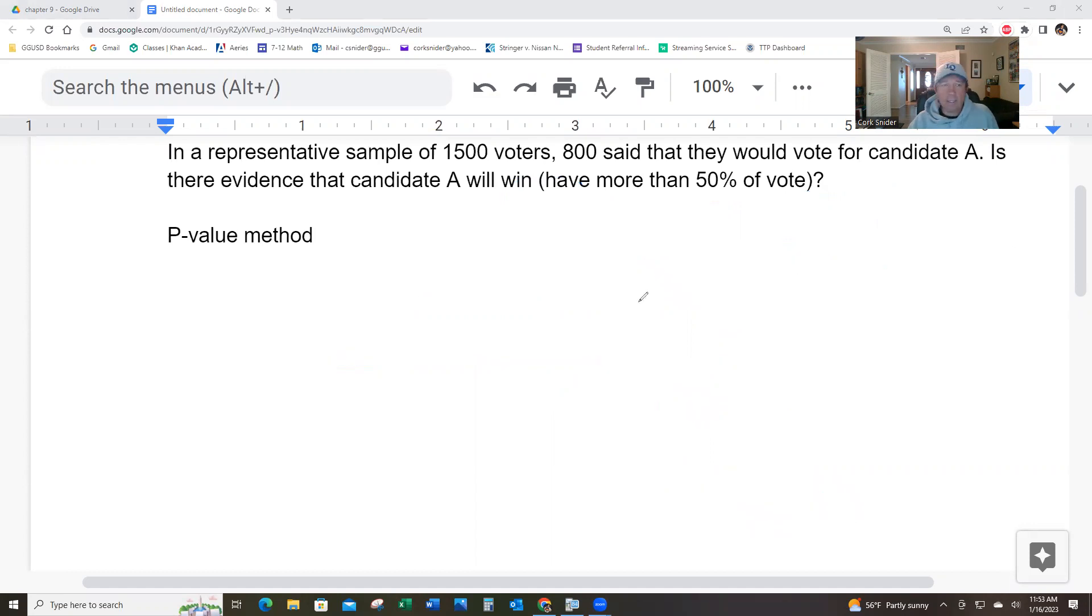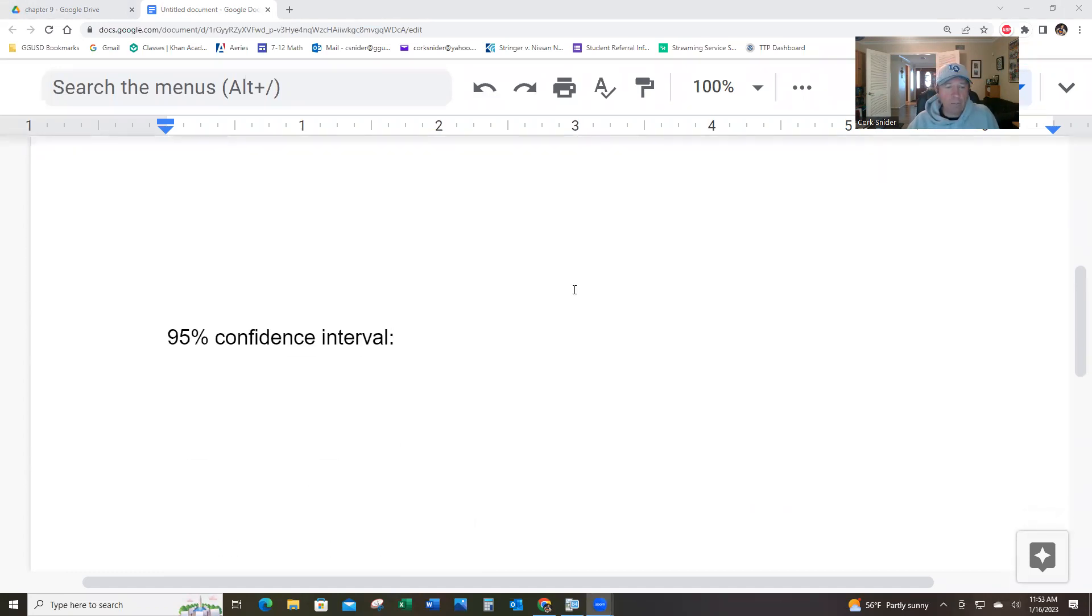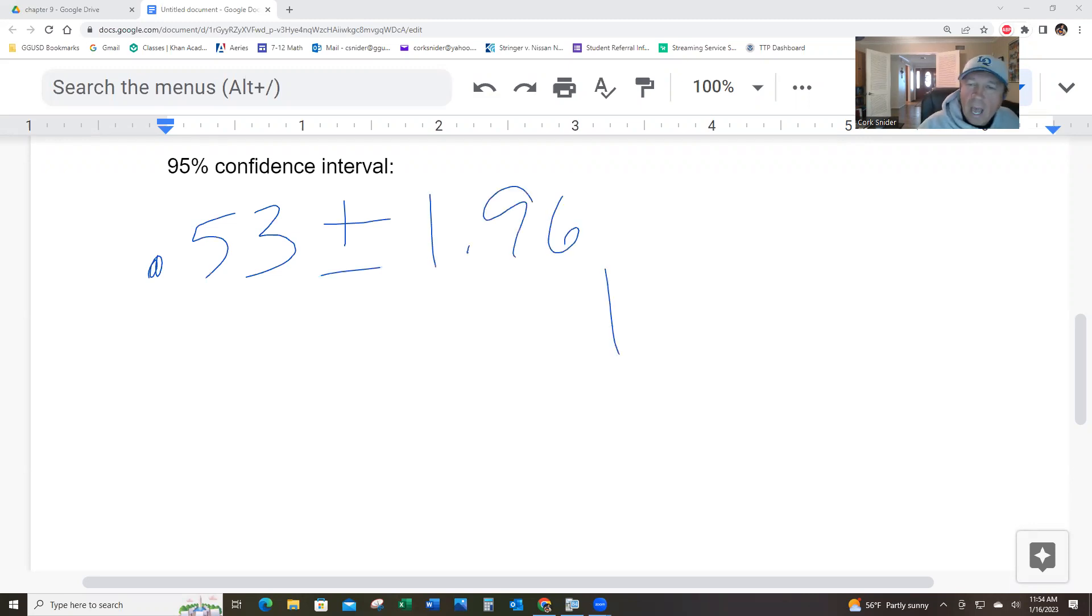Now, the other way of looking at this is through the eyes of a confidence interval. A confidence interval makes no assumptions, none whatsoever. What it does is take the facts that you have, which is 53%, and says, all right, 53% is what we think this candidate's percentage is, plus or minus, and we know 95% is 1.96. And the standard deviation will be 0.53, in this case. See the difference?